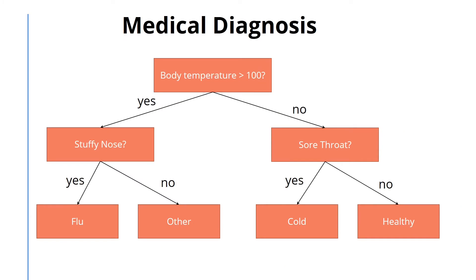Let's look at a simple example that illustrates how decision trees work. Say we want to give a diagnosis where based on some information about the patient's symptoms, we would like to classify the patient to one of four categories: flu, cold, healthy, and other. This picture shows a simple hypothetical decision tree.